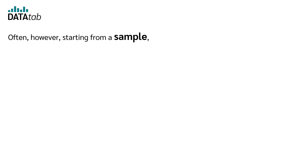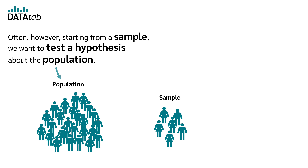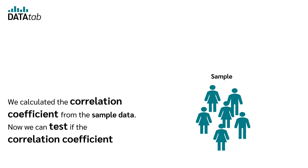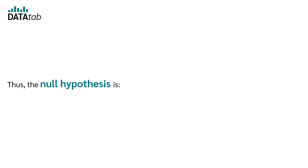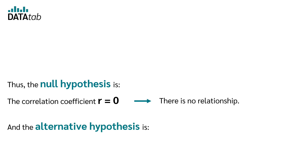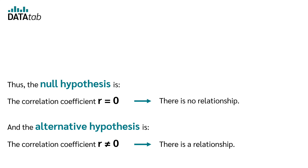Often, however, starting from a sample, we want to test a hypothesis about the population. We calculated the correlation coefficient from the sample data, and now we can test if the correlation coefficient is significantly different from 0. The null hypothesis is that the correlation coefficient R is equal to 0 — there is no correlation. And the alternative hypothesis is that the correlation coefficient R is unequal to 0 — there is a relationship.